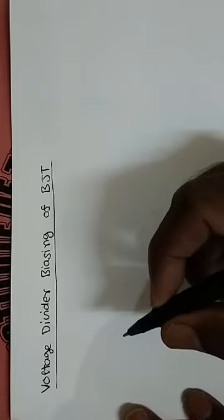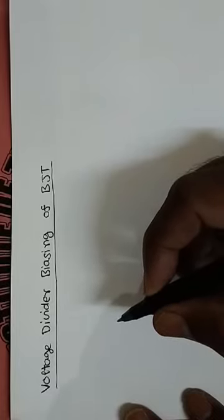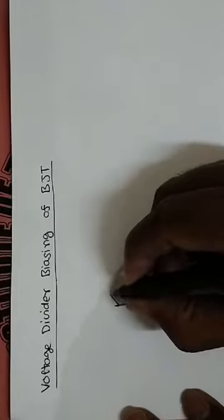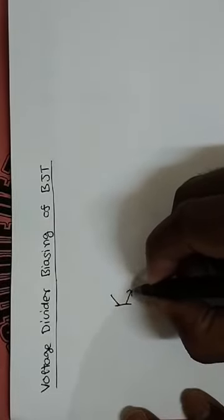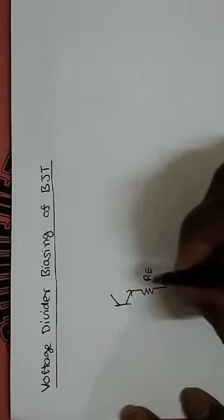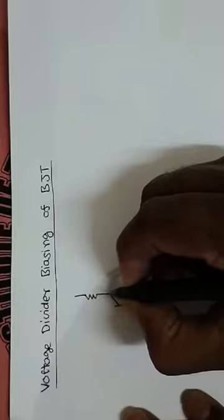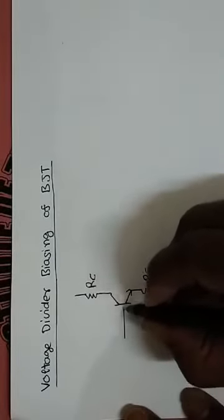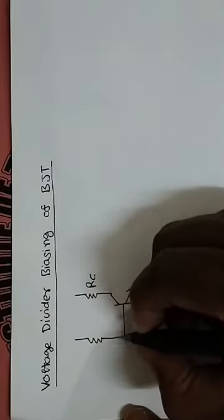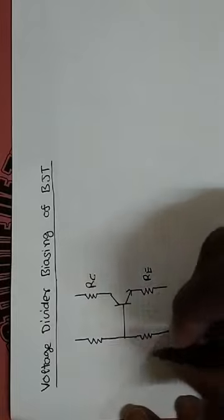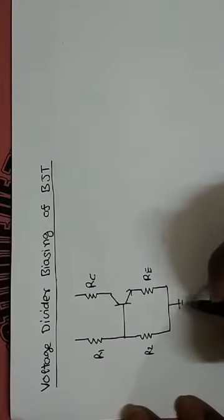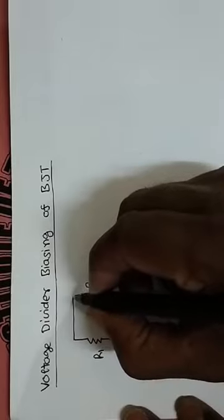Voltage divider biasing में हम एक voltage divider network यूज़ करते हैं, जो कि हम दो resistor R1 और R2 को यूज़ करके बनाते हैं. इसका circuit इस तरह से होता है — यह NPN transistor है, जिसका emitter resistance RE है, collector resistance RC है, और base पर हम दो resistor यूज़ करते हैं. और यह ground कर दिया है, और यह power supply VCC है.